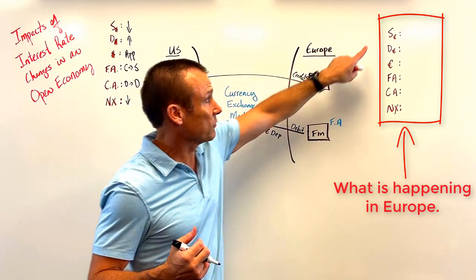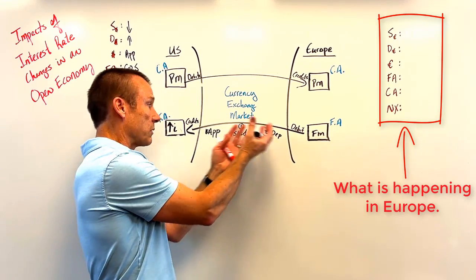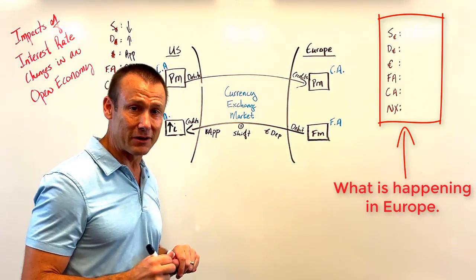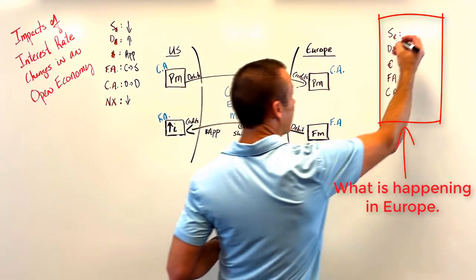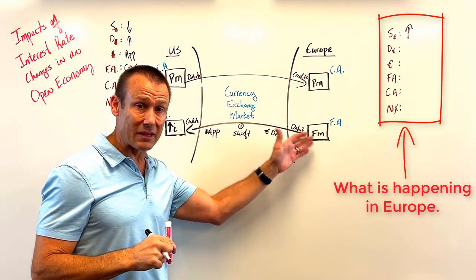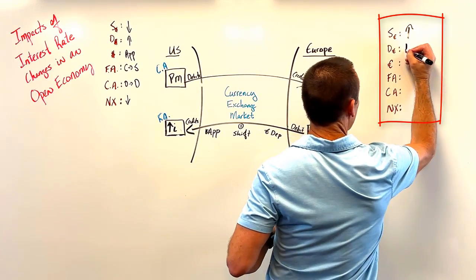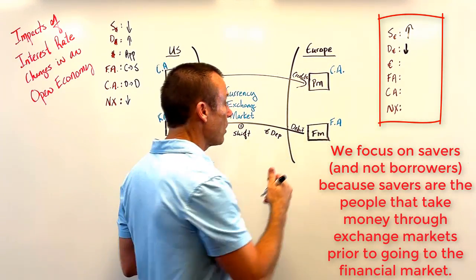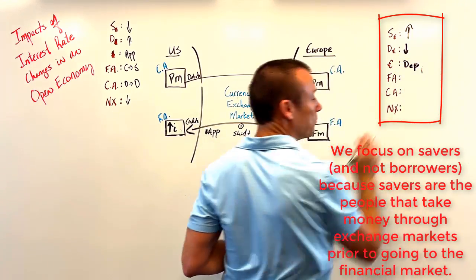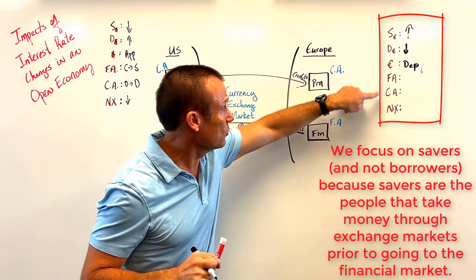We can do all the same type of questions for the European economy. For the supply of euros: when that interest rate goes up in the U.S., Europeans are going to supply their euros to get their wealth over there — money flows towards higher interest rates, where you can get the highest returns. So you get an increase in the supply of euros. Americans are going to want to save there less, so they demand fewer euros. Both of these changes cause the euro to depreciate.